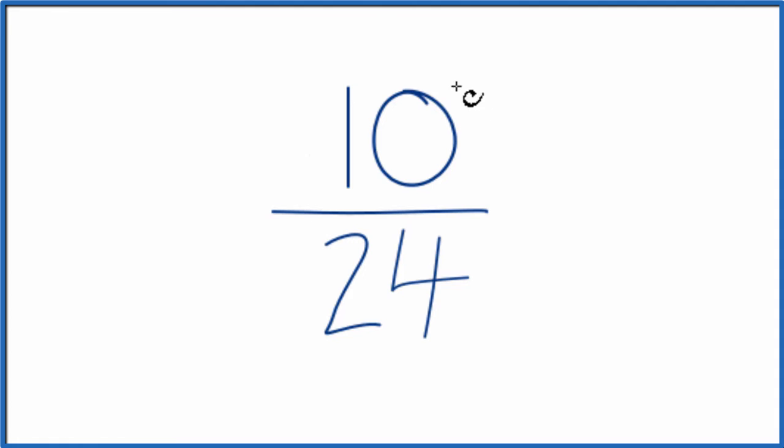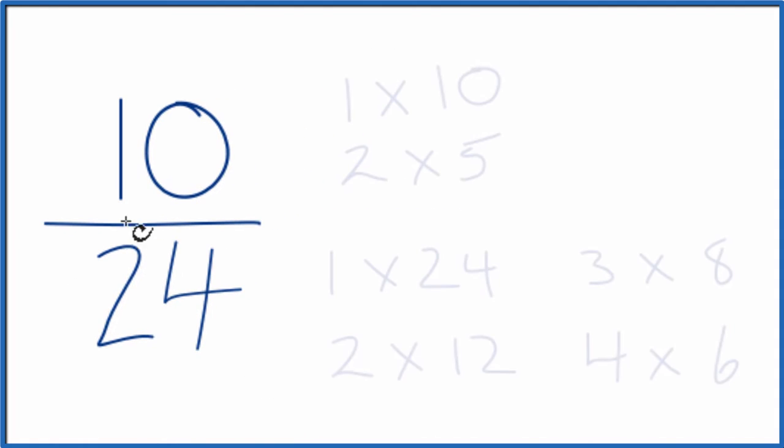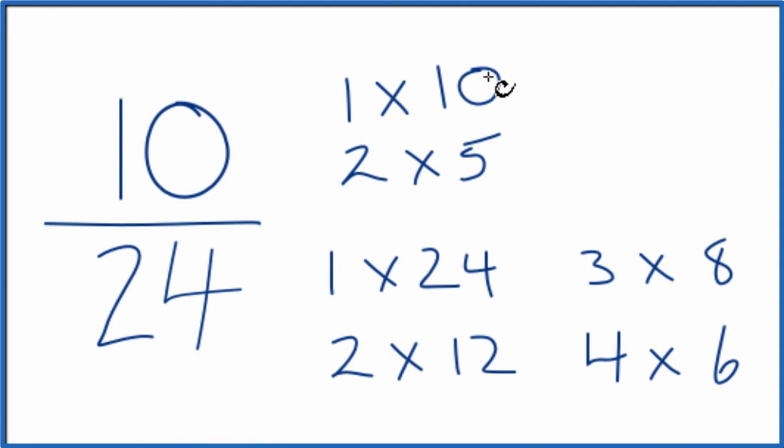To do that, we need to write the factors for 10 and 24. So these are the factors of 10 and of 24, and we're looking for the greatest common factor. So as I look through here for the greatest common factor, it looks like 2. 2 is the greatest common factor between 10 and 24.